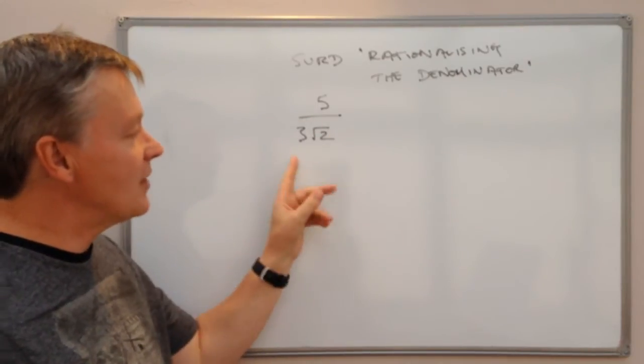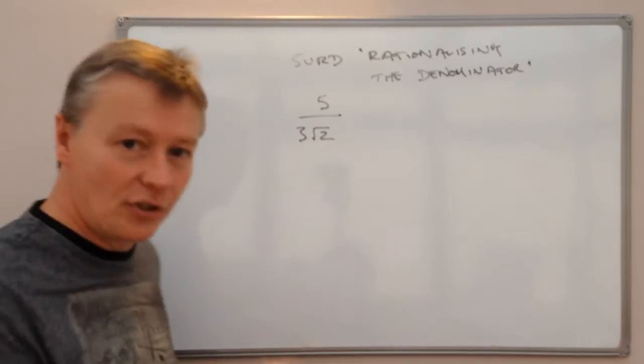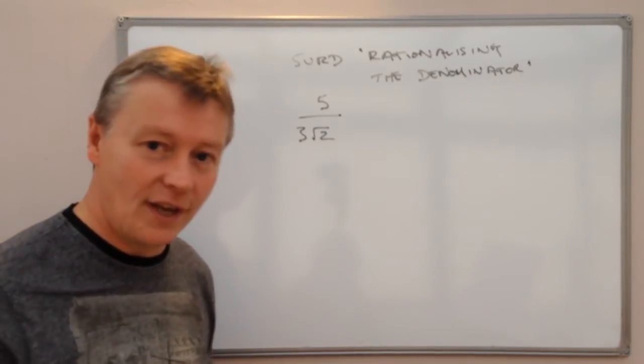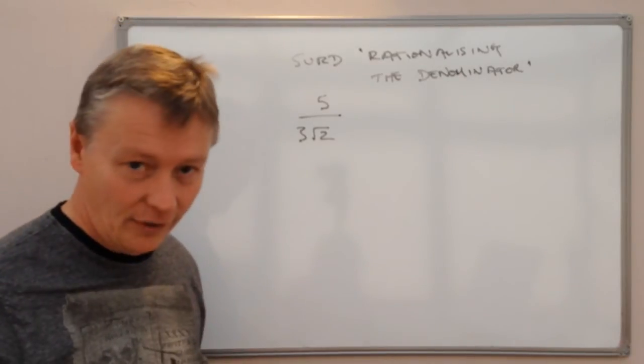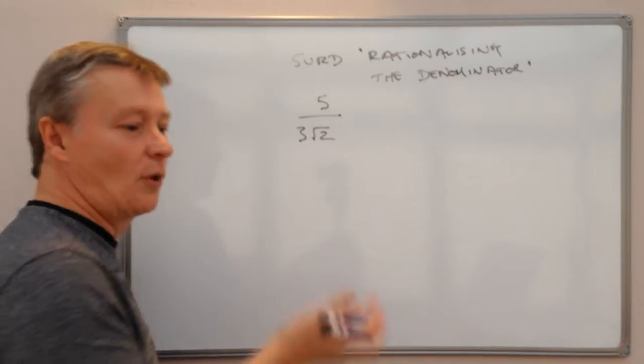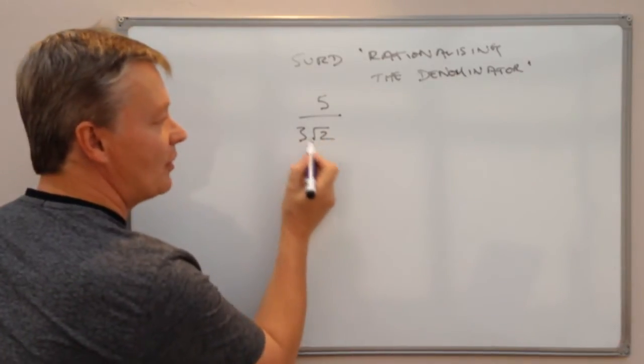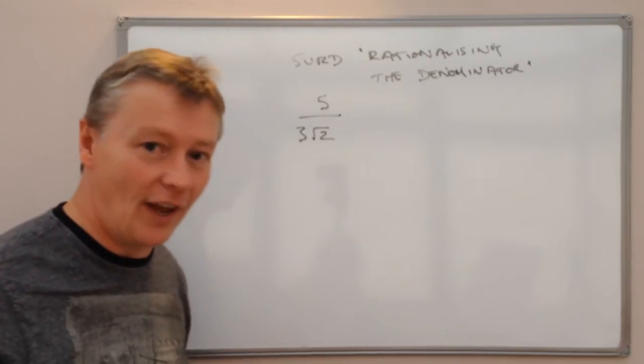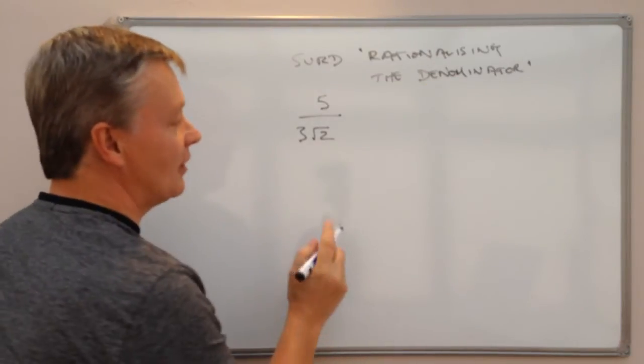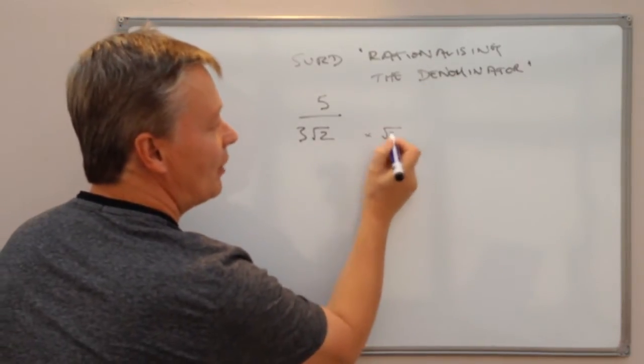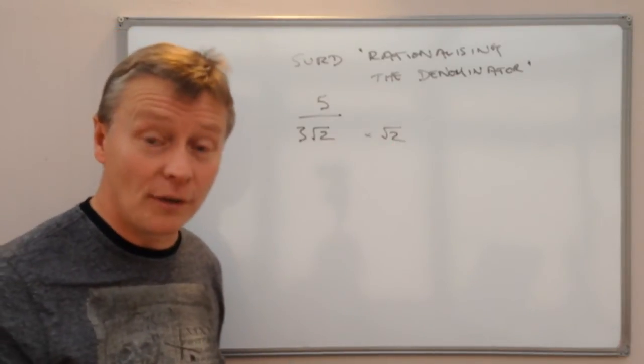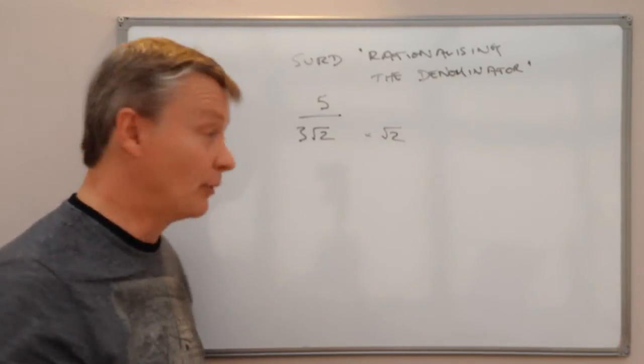Okay, well the thing to remember with this is that if you've got 2 roots that you multiply together, providing they're the same root, then you get a whole number. So what we've got here is at the bottom I've got root 2 and I need to get rid of that because I need to rationalise. So if I multiply the bottom by root 2 I've also got to multiply the top by root 2.